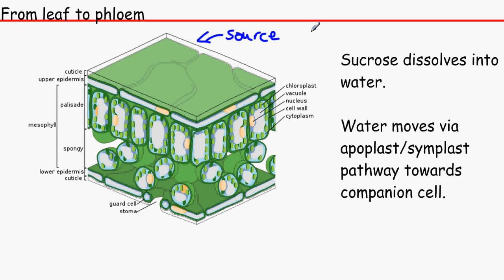So that dissolved sucrose in the water moves through the plant cells, either through the apoplast pathway, so that's like moving along the cell walls, or through the symplast pathway just going through it, to be honest, towards the companion cell.